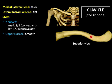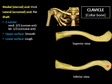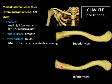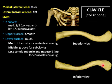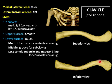The upper surface of the clavicle is flat throughout its whole length, whereas the lower surface is rough. It shows a medial tuberosity for the costoclavicular ligament, a middle groove for the subclavius muscle, and a lateral thickening or roughness for the coracoclavicular ligament. This ligament is made of two parts: a conoid part and a trapezoid part. The conoid part is attached to the conoid tubercle close to the posterior border, whereas the trapezoid part is attached to the trapezoid line.